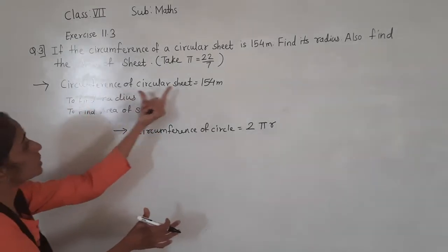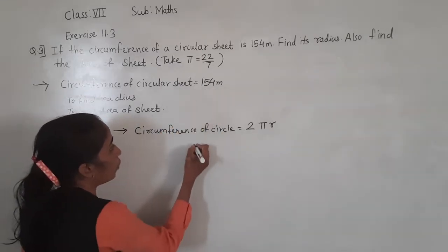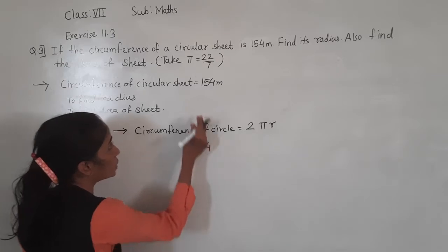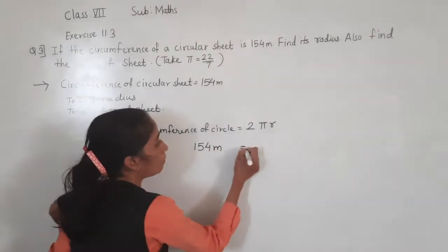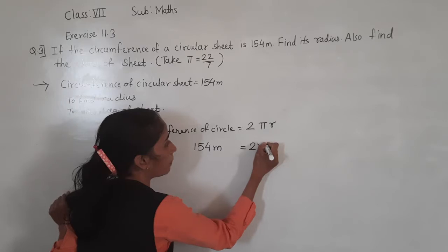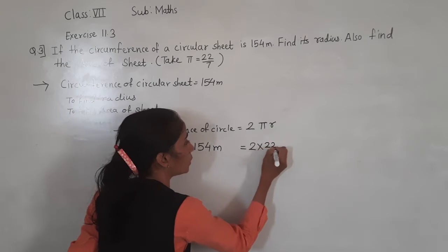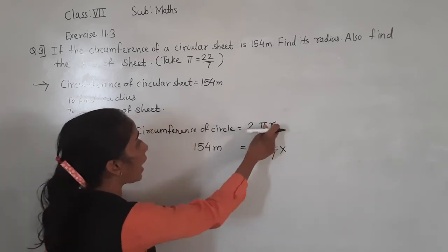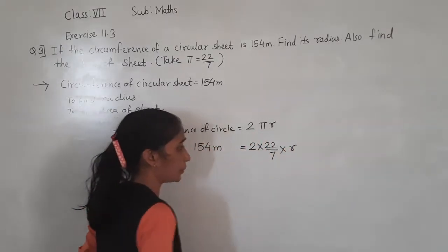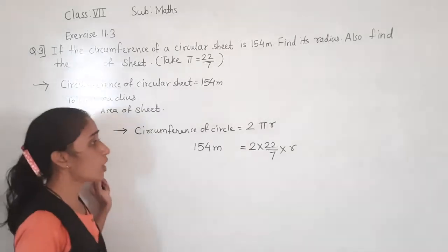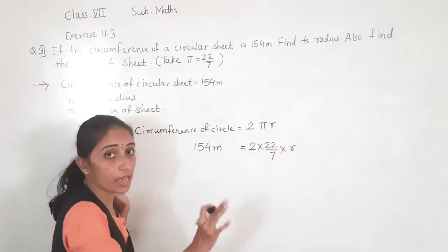Circumference of circular sheet is given as 154 metres. So 2πr = 154. The value of π is given as 22/7. So: 2 × (22/7) × R = 154. R is the radius, that we have to find.